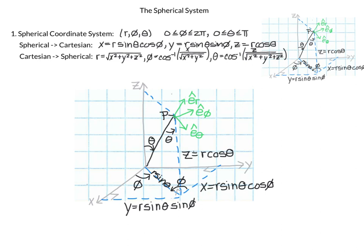At point P we have our unit vectors labeled. e_r goes in the same direction as r. e_phi is in the direction of increasing phi — as phi increases, e_phi is tangent to the circle. Similarly, e_theta is tangent in the direction of increasing theta. We'll discuss this more shortly.